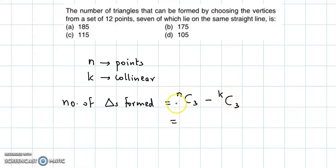Now here, n, the total number of points, is 12. Of which 7 lie on the same straight line, meaning the collinear points are 7. So the value becomes 12C3 minus 7C3.